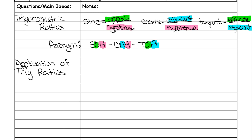We're going to look at the applications of the trig ratios. We use them for right triangles. Here's an example of a right triangle. Whenever you take the sine, cosine, and tangent of something, you're taking it of an angle measure, and they're used on right triangles. The angle measure is either of the two that are not 90 degrees — you will never take the sine, cosine, or tangent of 90 degrees.